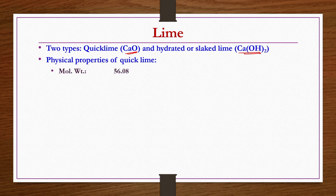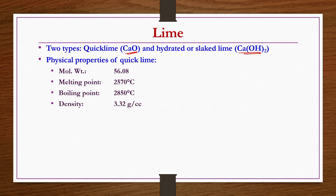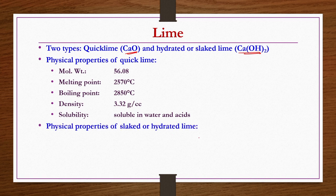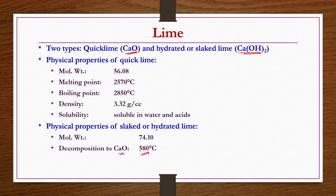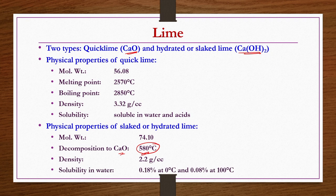Physical properties of quick lime: molecular weight is 56.08, melting point is 2570 degree centigrade, boiling point is 2850 degree centigrade, density is 3.32 gram per cc, and it is soluble in water and acids. Physical properties of slaked or hydrated lime: molecular weight is slightly higher at 74.10 because it is hydrated with water. However, it decomposes to calcium oxide at 580 degree centigrade. Its density is 2.2 gram per cc. Solubility in water is low, about 0.18 percent at 0 degree centigrade, which further decreases if you increase the temperature to 100 degree centigrade.